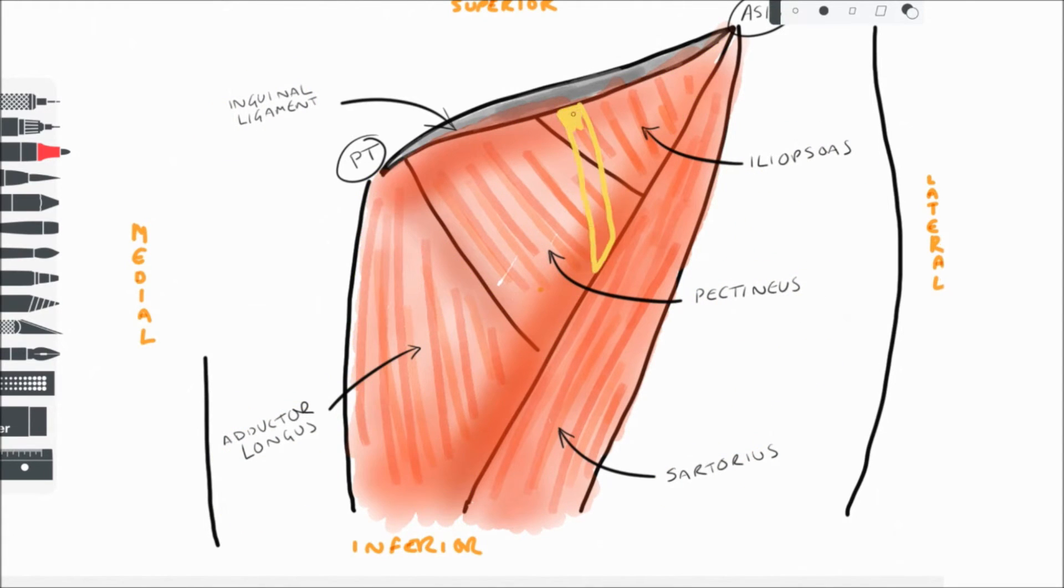Now what we need to do is consider the roof, but before we get to that—before we close the box—let's think about the main contents passing through the femoral triangle. It's the contents that make this area so interesting and relevant.